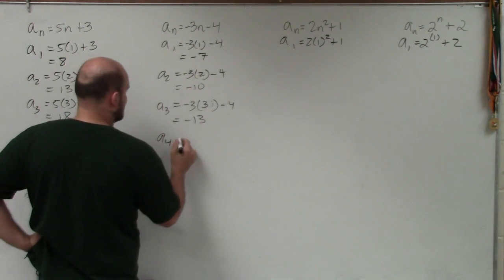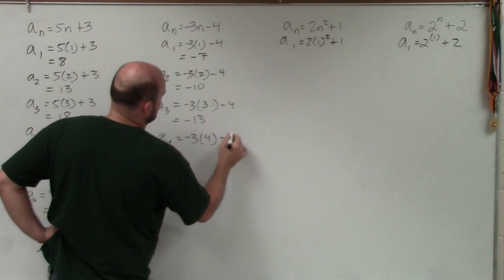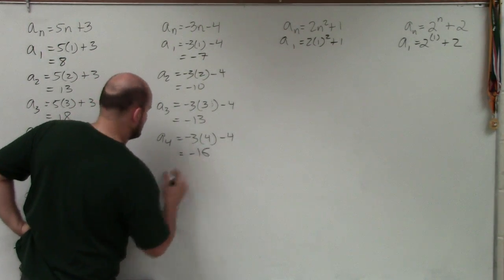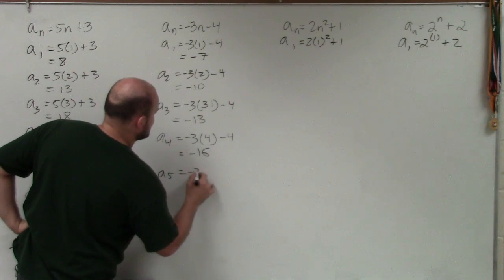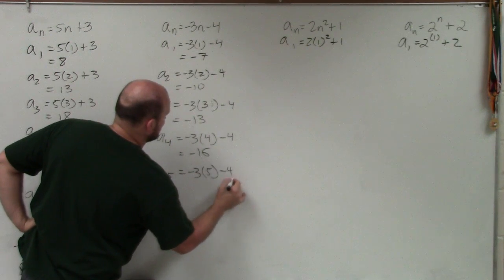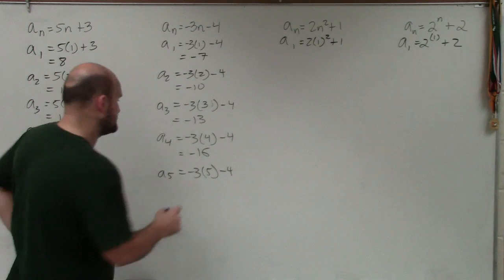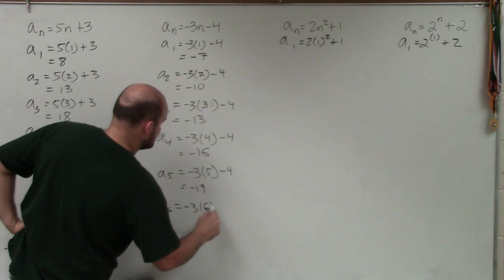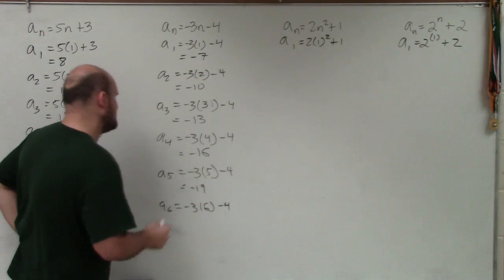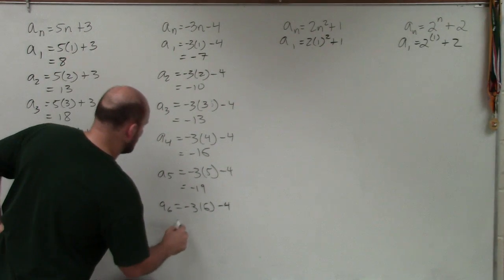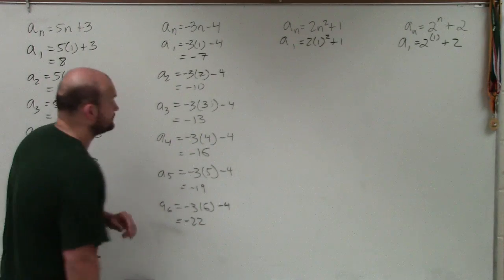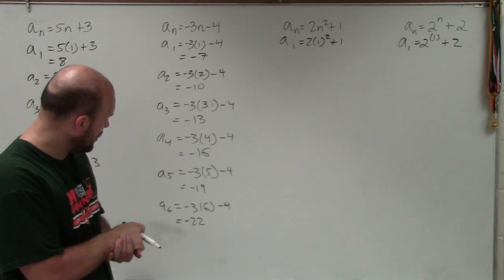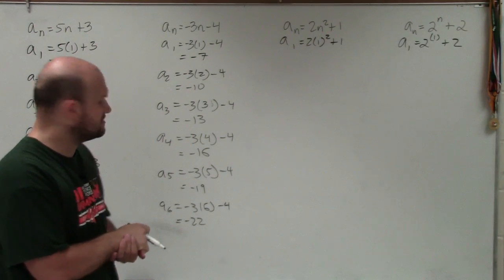A sub 4 is going to be negative 3 times 4 minus 4. Negative 3 times 4 is negative 12. Minus 4 is going to be negative 16. A sub 5 is negative 3 times 5 minus 4. Negative 3 times 5 is negative 15. Minus 4 is negative 19. And let's go to a sub 6 is negative 3 times 6 minus 4. Negative 3 times 6 is going to be negative 18 minus 4 is going to be a negative 22. Getting some good practice with our subtracting negative numbers.